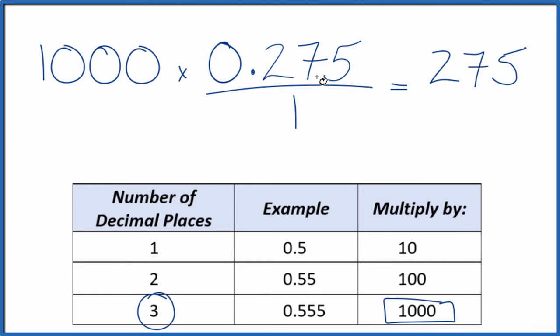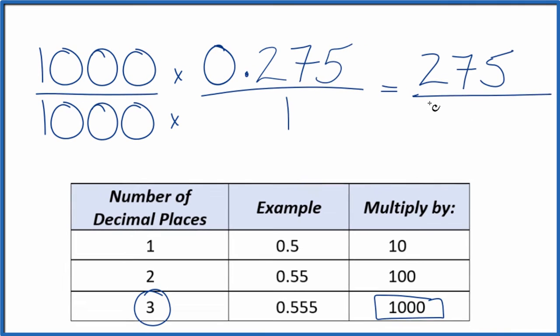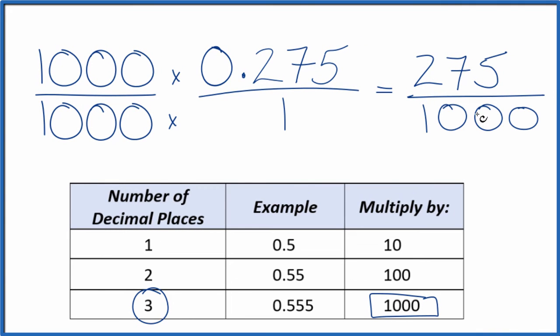But we can't just multiply the numerator. We also need to multiply the denominator by 1,000. That's because 1,000 divided by 1,000 is 1. So we're just multiplying by 1. We don't change the value, just the way it's represented. So 1,000 times 1, that is 1,000. And now we have a fraction.